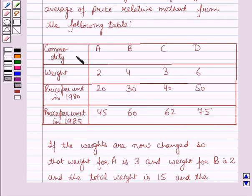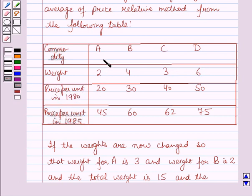In the table, the various commodities are given as A, B, C and D, and their corresponding weights are given as 2, 4, 3 and 6. The price per unit in 1980 for commodity A is 20, and for B, C and D it is 30, 40 and 50 respectively.